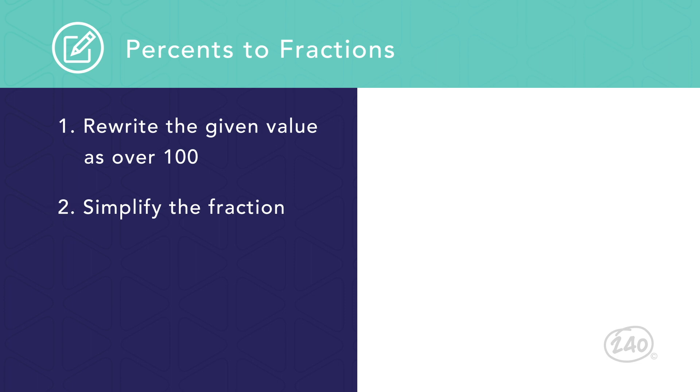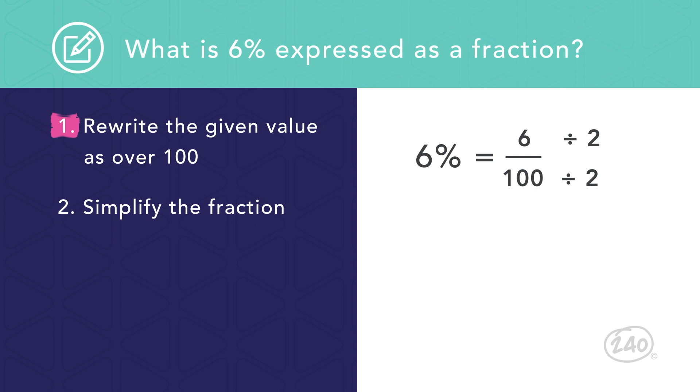Let's look at some example conversions. What is 6% expressed as a fraction? Start by rewriting the percentage as 6 over 100. Then divide both the numerator and denominator by 2 to simplify the fraction to 3 over 50. Now we found that 6% is equal to 3 50ths.